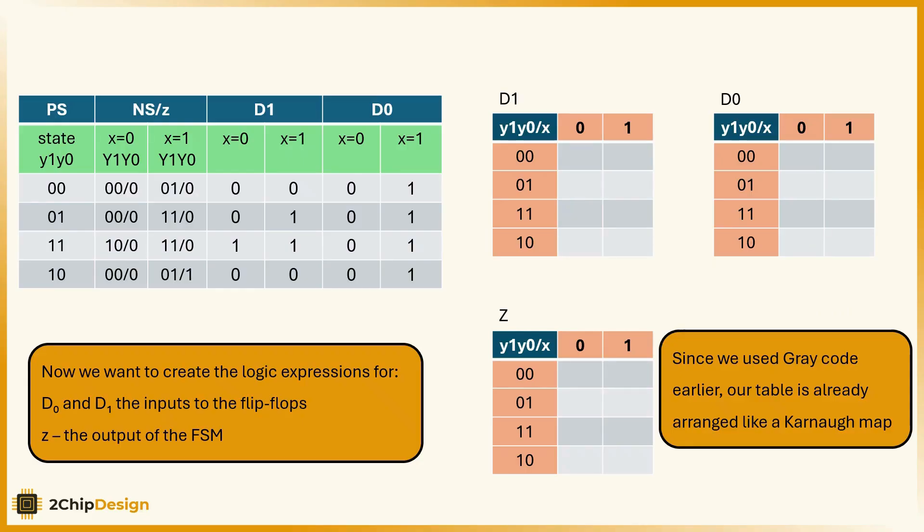Now we want to create the logic expressions for D0 and D1, the input of the flip-flops, and Z, the output of the FSM. Since we used gray code earlier, our table is already arranged like a Karnaugh map.